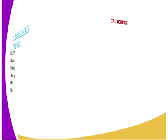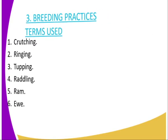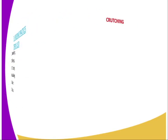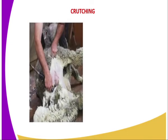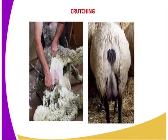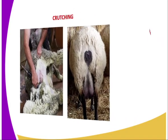Starting with the first one — Crutching. Crutching refers to the trimming of the hair around the female reproductive system, especially in sheep, to facilitate tapping. After crutching, that is what will be observed.